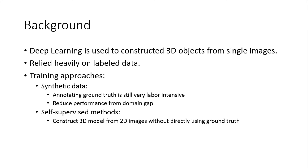With the rise of deep learning, this has become a more favorable method because deep learning can learn very complex structures and patterns — it is the most powerful approach we have so far. However, deep learning relies heavily on labeled data, meaning all training data must be manually annotated in a way that reflects the 3D structure of the object.